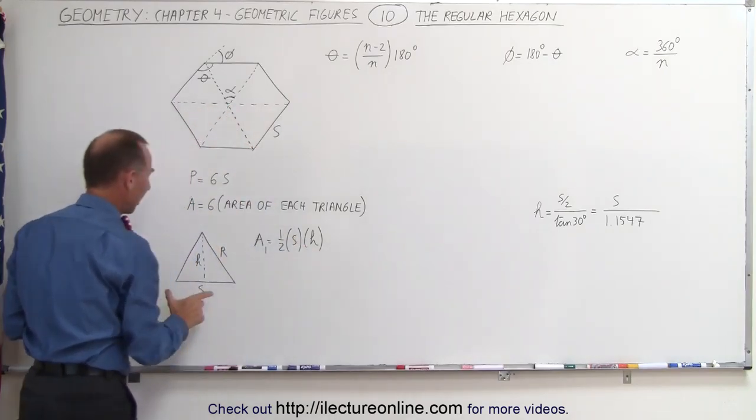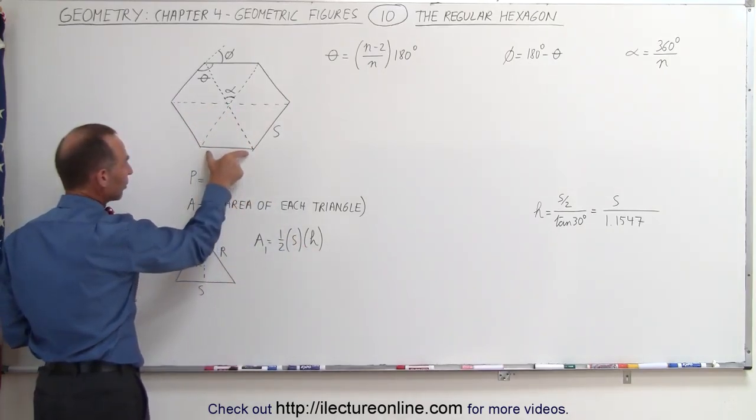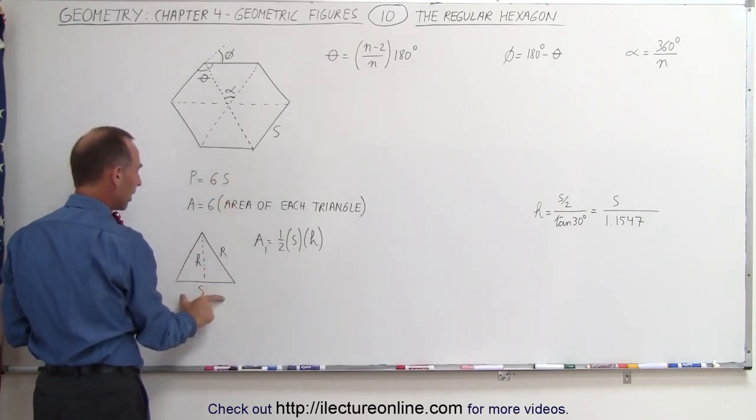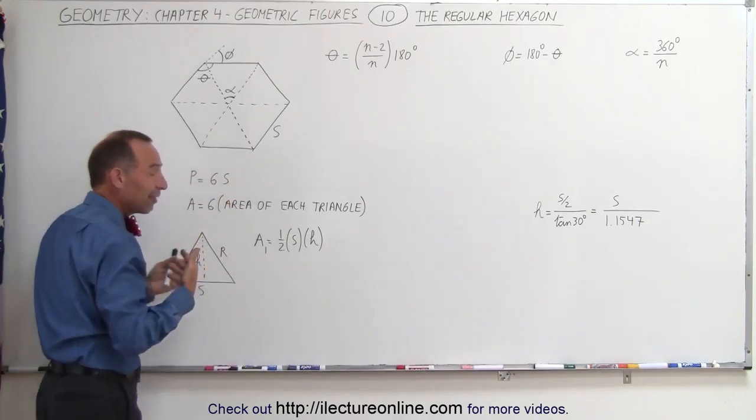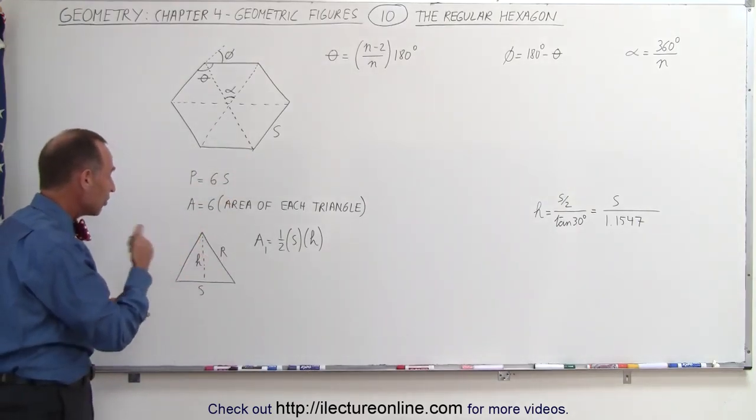If I take one of these triangles, I can see that the base is going to be equal to the side of the regular hexagon. The height is h, and we'll have to find some relationship between h and s.